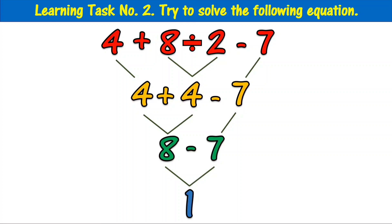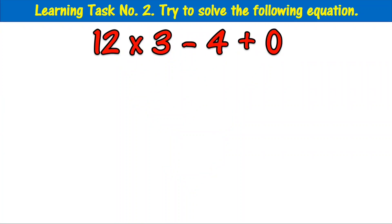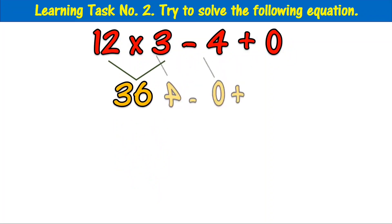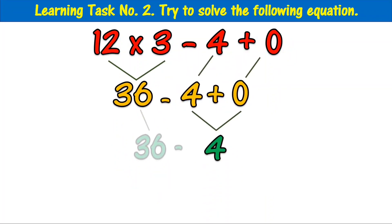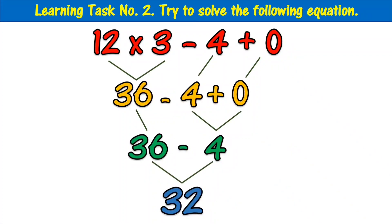12 times 3 minus 4 plus 0. The answer is 32.